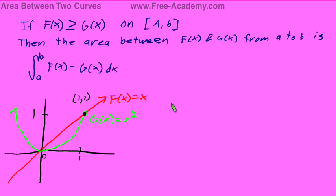There's a prerequisite condition for this. If you have two functions, f of x and g of x, and f of x is greater than or equal to g of x on an interval from a to b, then the area between f of x and g of x from a to b is the definite integral from a to b of f of x minus g of x dx.